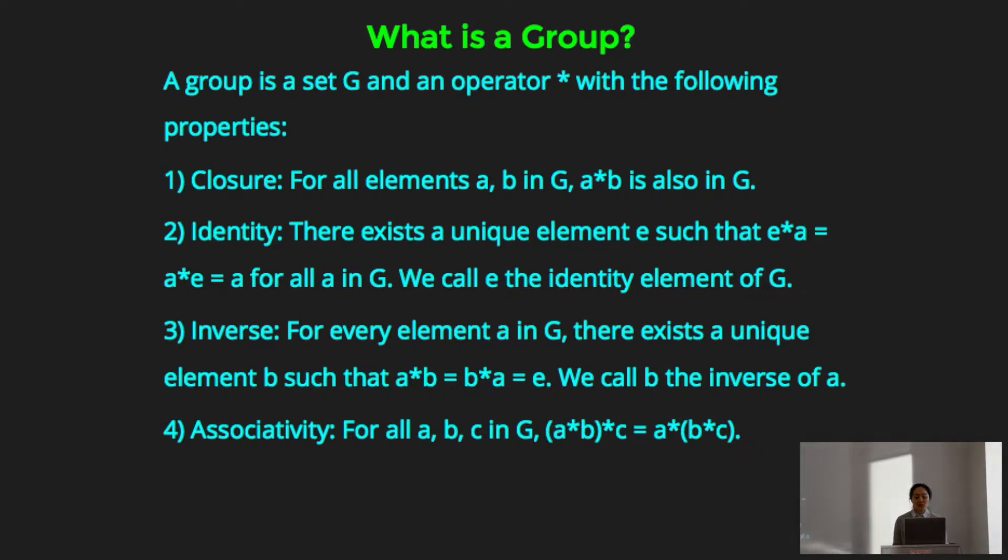Third axiom, inverse. For every element a in G, there exists a unique element b, such that a star b equals b star a equals e, or the identity. So if you're thinking of addition, the inverse of any number is just the negation of that number. If you're thinking of multiplication, the inverse of a number is just one divided by that number.